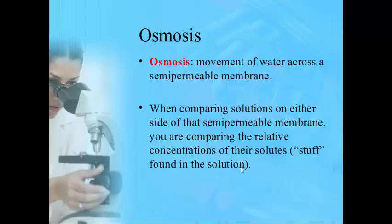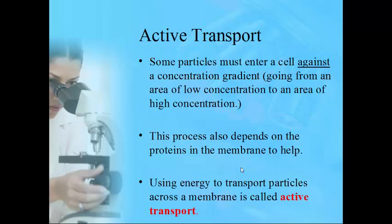When comparing solutions on either side of the cell membrane, you're comparing concentrations of solutes inside and outside the cell — that determines where water will move. The first three types don't require energy because they go from high to low concentration. Active transport is the opposite — you go against the concentration gradient, from low concentration to high, going uphill. That's why energy is needed, and this process also depends heavily on membrane proteins.